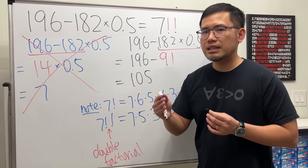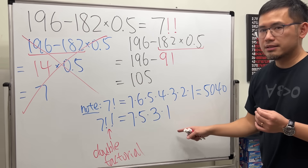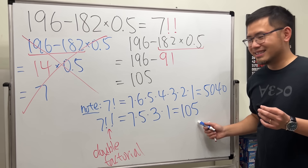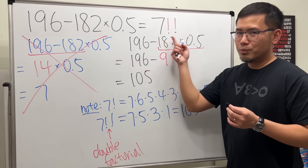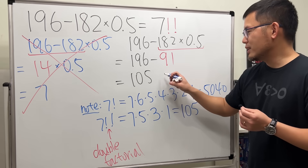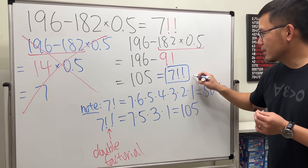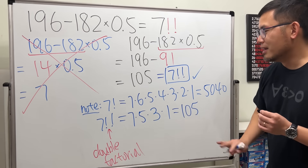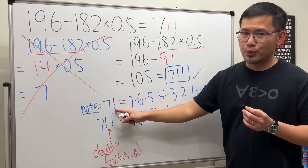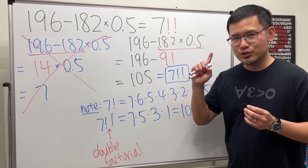So 7 double factorial — multiply that out and you get 105. Based on the correct order of operations you also get 105, or you can write it as 7!! to make it look legitimate. So in fact there are more factorials than just the regular factorial. I have a video on seven more factorials you might not have seen before — it's right here, go check that out.